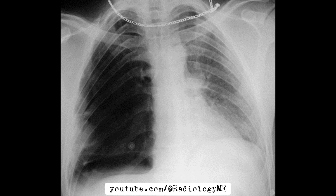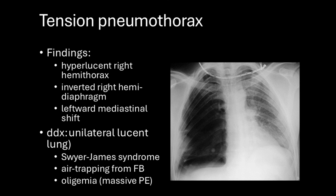But it's not just the pneumothorax that's concerning. The right diaphragm appears inverted, meaning the increased pressure from the air is pushing down on it. Even more concerning is the leftward shift of the mediastinum. This shift indicates that the pressure in the right thoracic cavity has increased to such an extent that it's beginning to push the heart and major vessels towards the left side. This is a classic finding of a tension pneumothorax — a medical emergency.